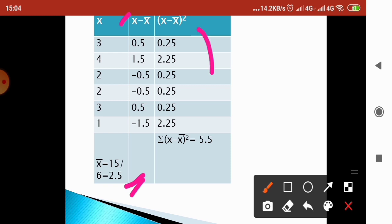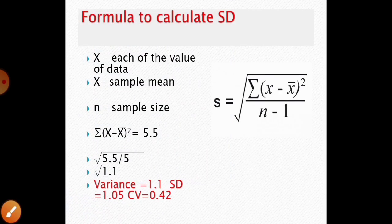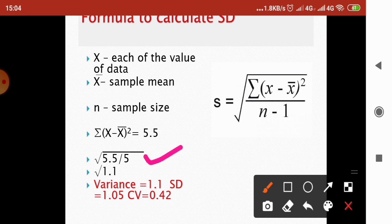Similarly, we calculated for all the elements and finally obtained sigma(x minus x-bar) squared equal to 5.5. Substituting all these values in the formula: root of 5.5 divided by n minus 1; n is 6, so n minus 1 is 5, giving us 1.1.